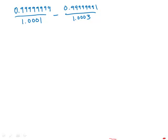Here we have ugly decimal fraction number one minus ugly decimal fraction number two, and we'd like to figure out the difference. Doing the calculation straight out with all these decimals would be horrible without a calculator, so we're going to use an algebraic shortcut. Notice first that this first denominator is one plus a number four decimal places past the decimal, so that is one plus ten to the negative fourth.